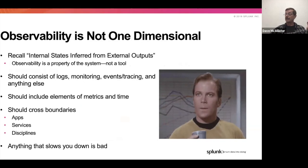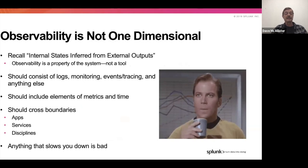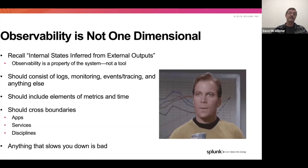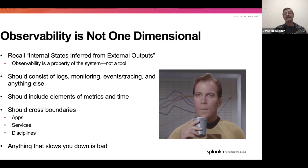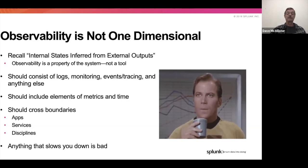Observability is definitely not one dimensional. If you think about internal state inferred from external output points, observability is a property of the system — it itself is not a tool. There are tools that assist in observability, but it can't just be 'there is an observability tool.' We need to be able to see everything going on, so it should consist of things like logs, monitoring, events, tracing, and anything else that applies to those functions.